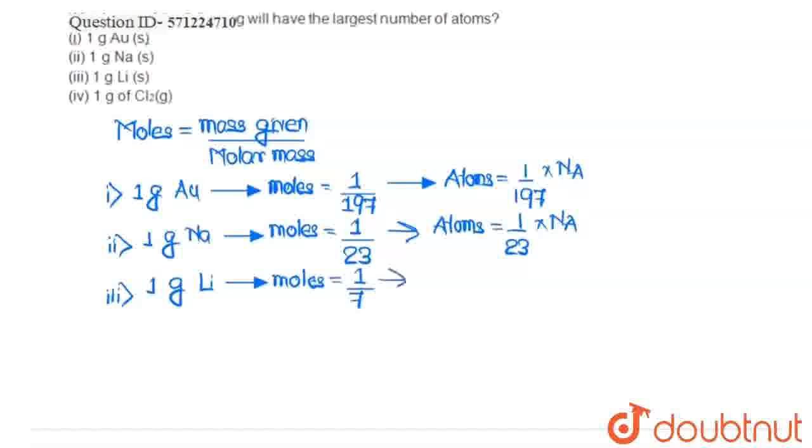Then, the number of atoms of lithium will be the number of moles, 1 by 7, multiplied by the Avogadro number.